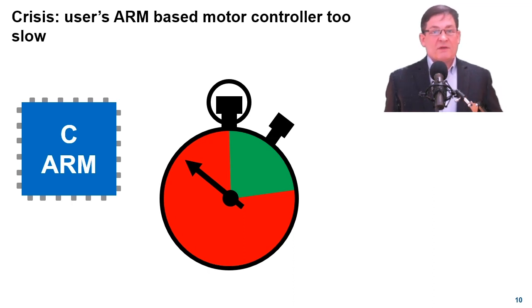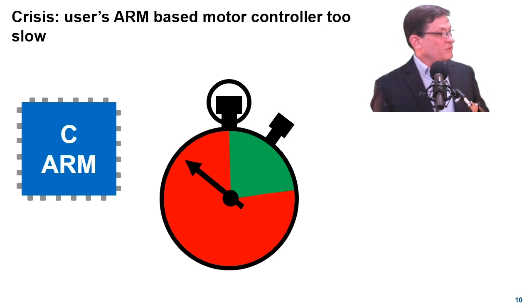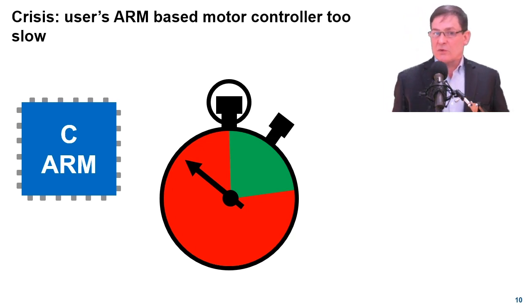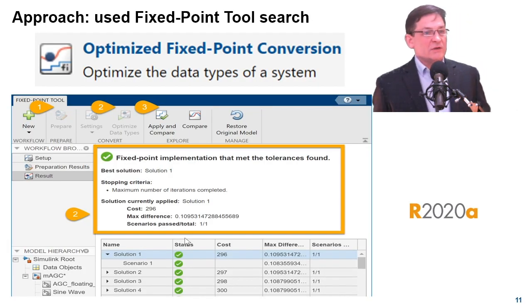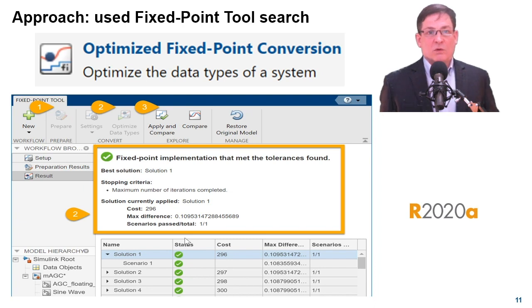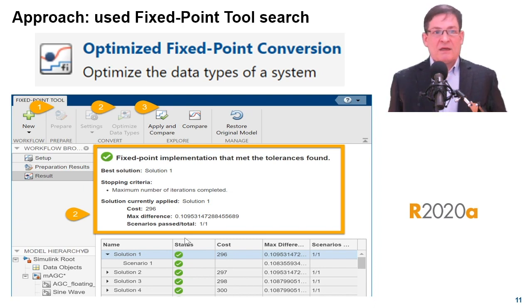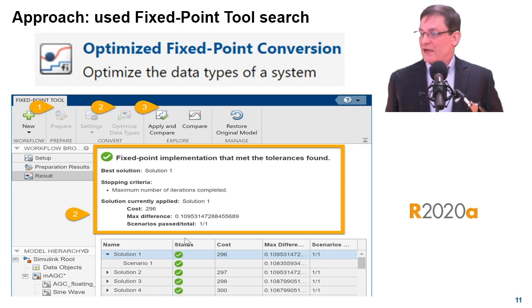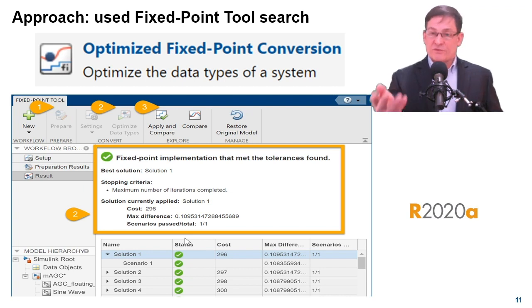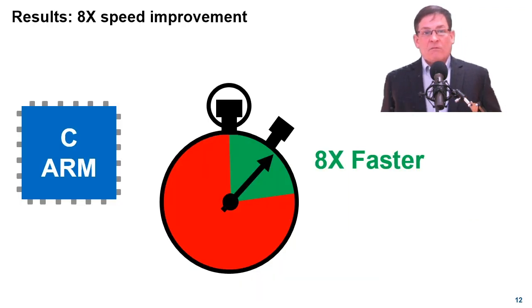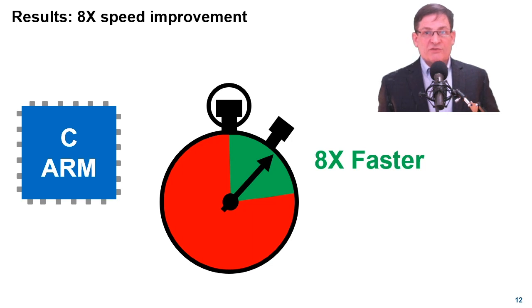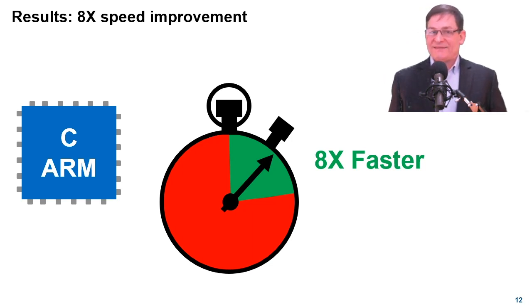Let's look at a few examples. A user recently came to us with a resource crisis: their ARM-based motor controller was much too slow. We recommended they use our tool that searches for an optimal mixed precision design. The new graphical interface shown on this slide makes it easy to see that many feasible solutions were found and the best was applied. For the user's 380-block motor controller, the optimization search produced a mixed precision design that was eight times faster and solved their crisis.